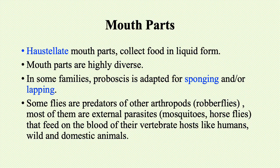Mouth parts are of diverse types. For example, mosquitoes have piercing and sucking type of mouth parts, while house flies have sponging type of mouth parts. In some families, the proboscis is adapted for sponging and lapping. Haustellate mouth parts collect food in liquid form, and in several families the proboscis — also known as a rostrum — is adapted for sponging.